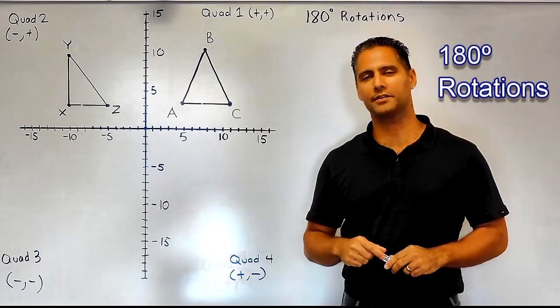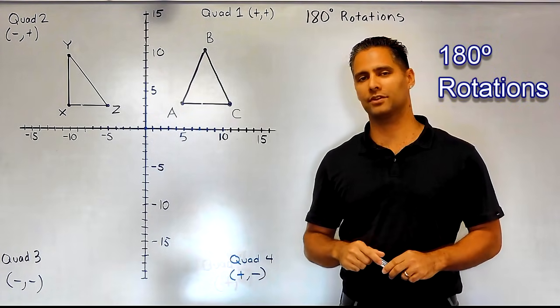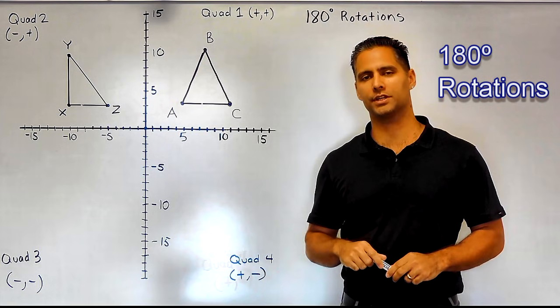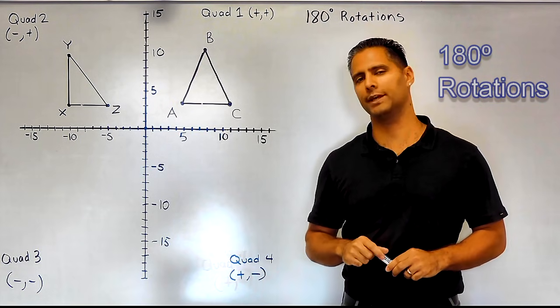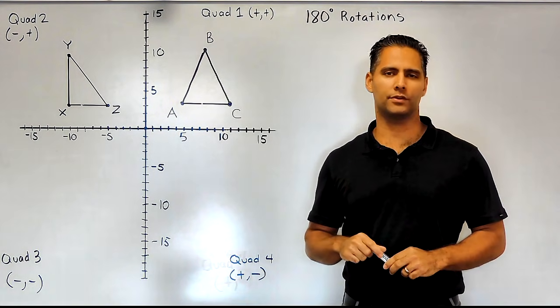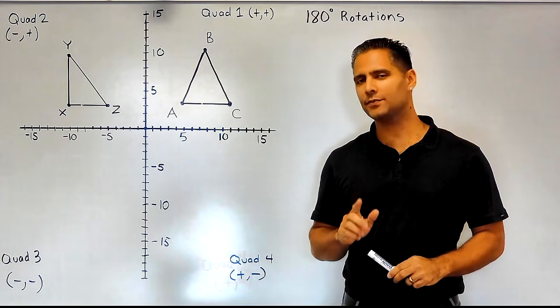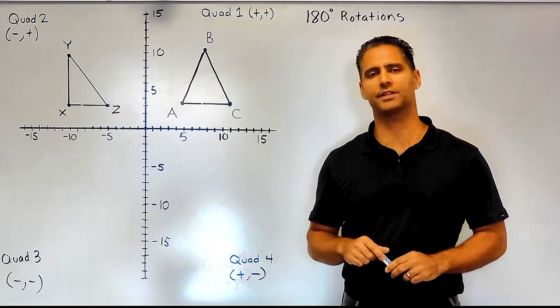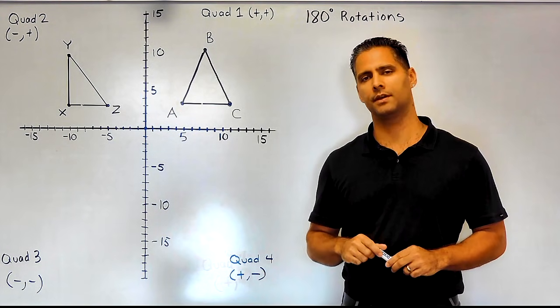Today we are going to practice rotating objects 180 degrees around the origin on the coordinate plane. The first thing that we want to do is identify the current coordinates of the object in question.